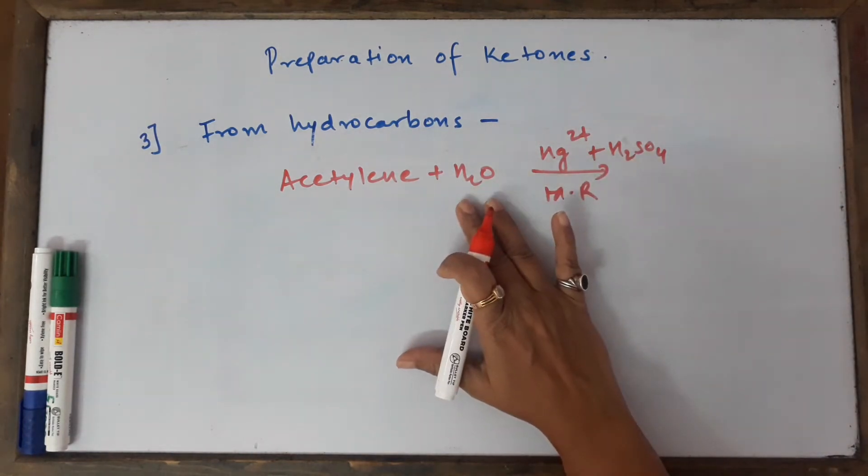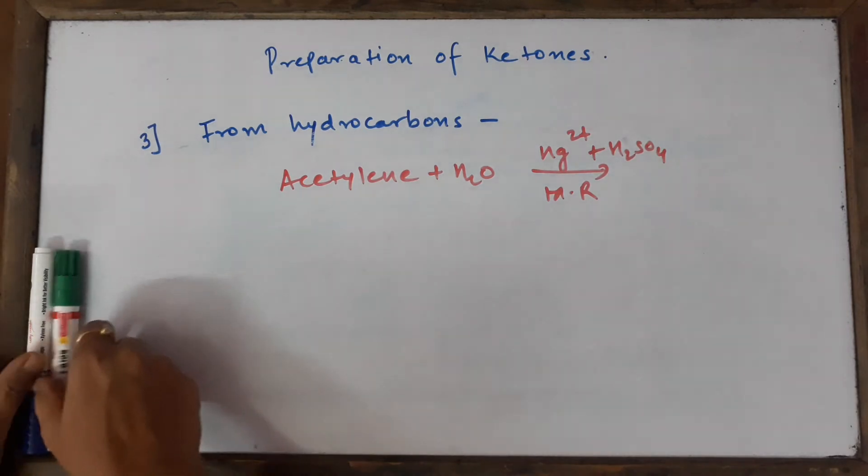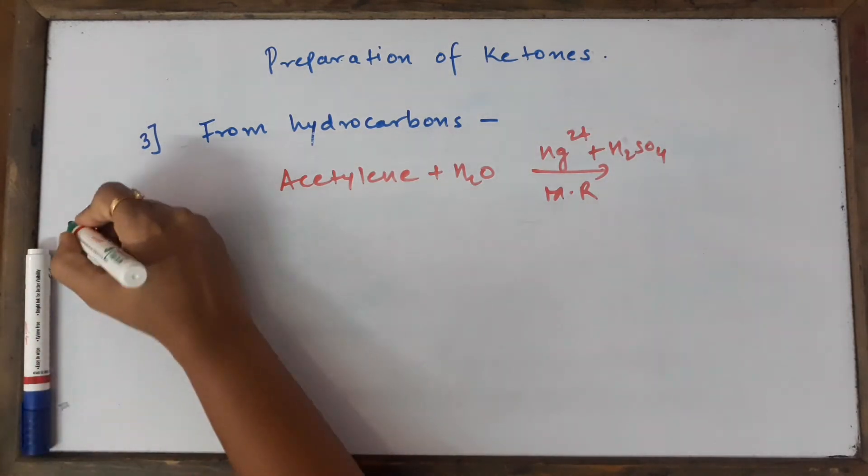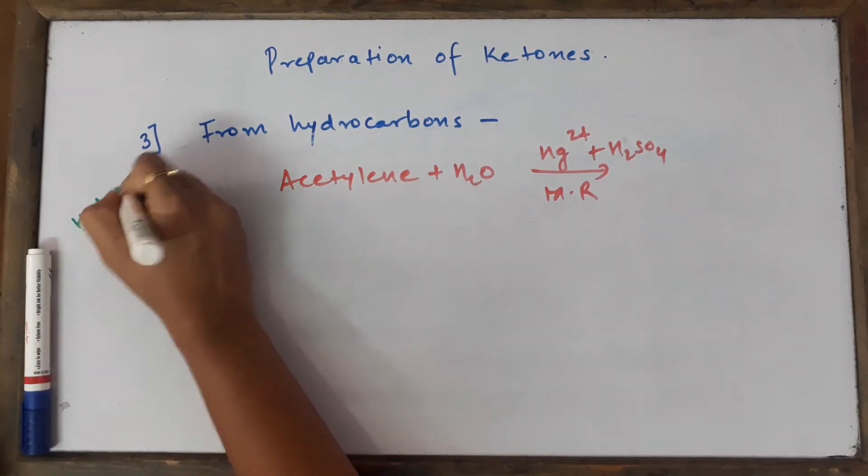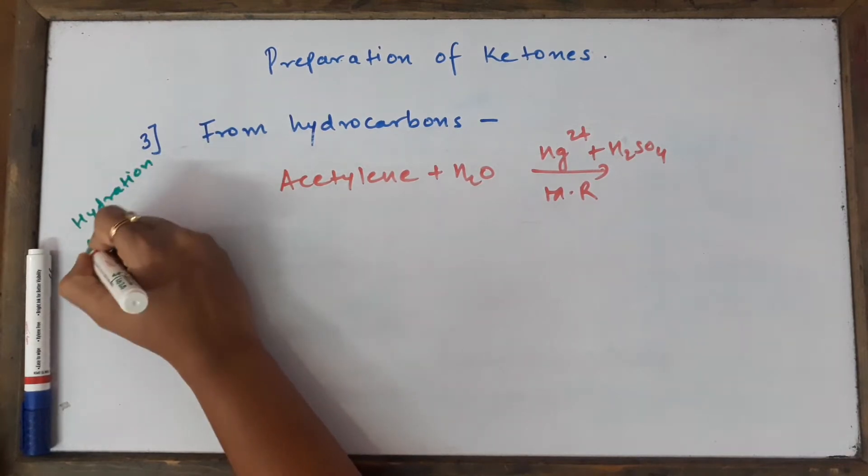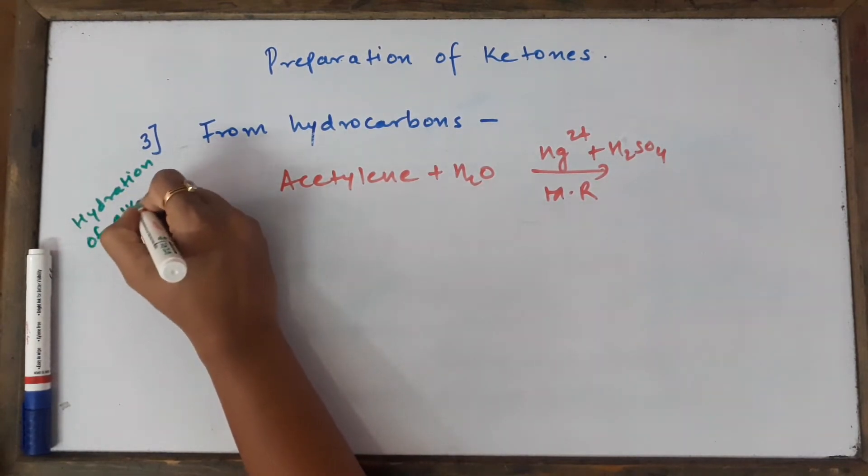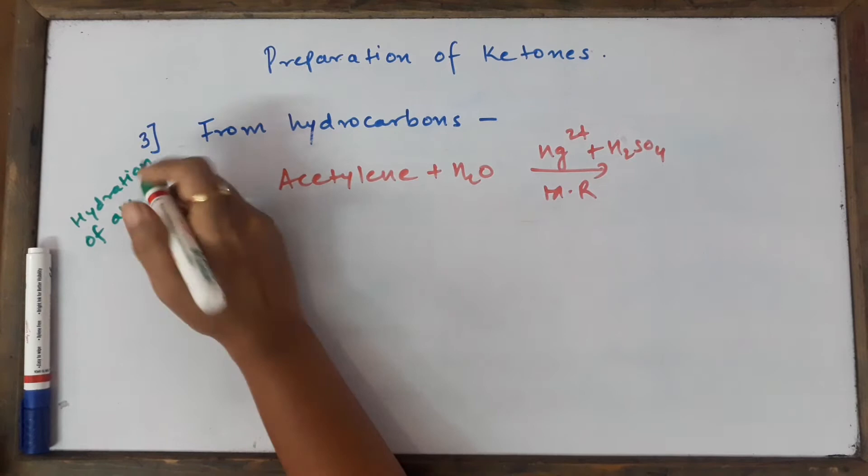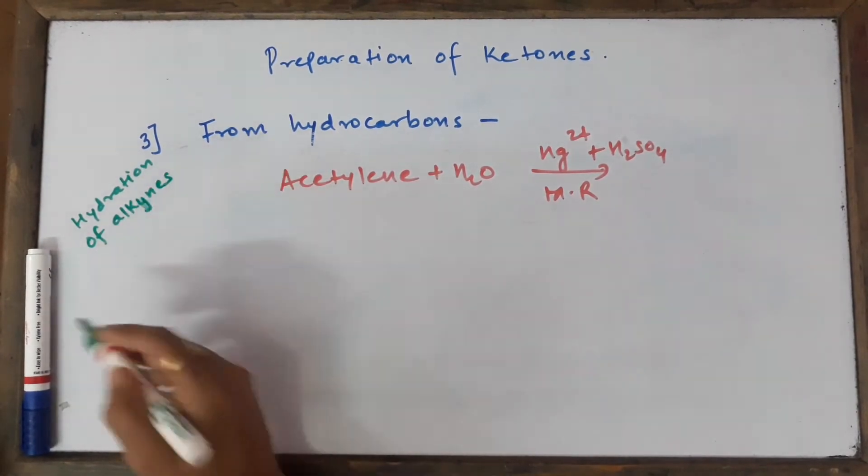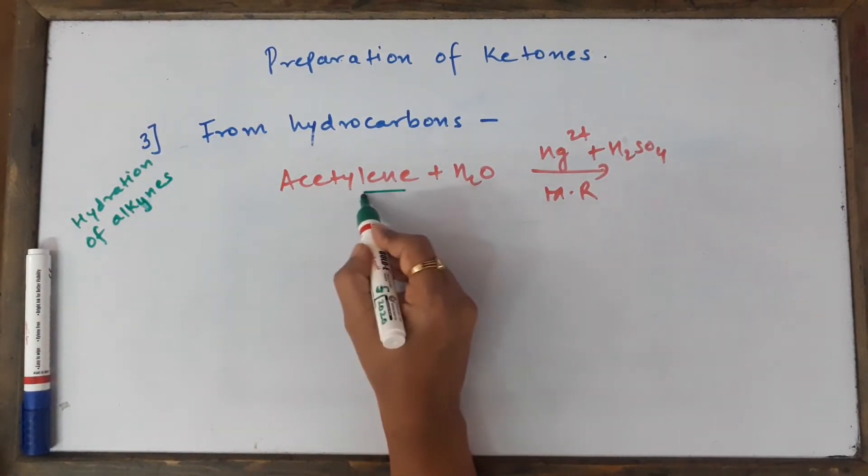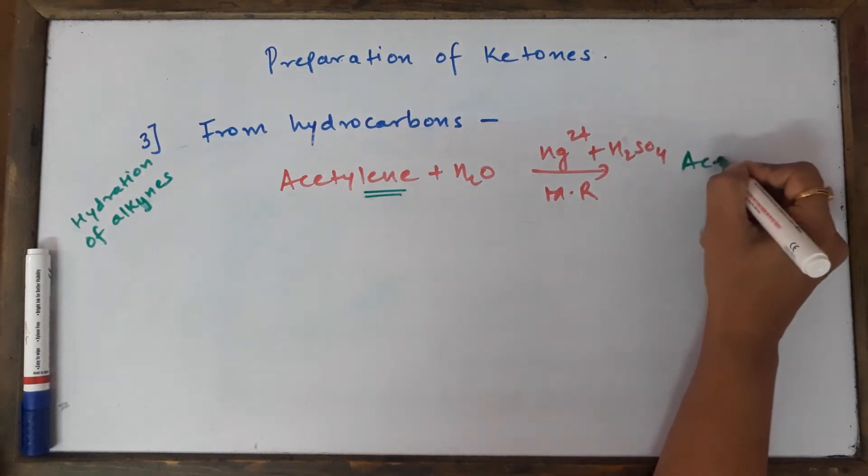This method is called hydration of alkynes - that means adding water to the alkynes. The simplest alkyne if you take and you add water to it, you get acetaldehyde.